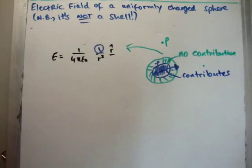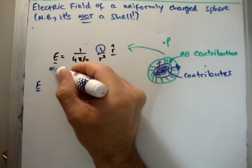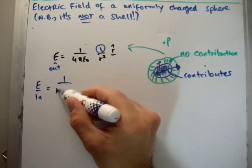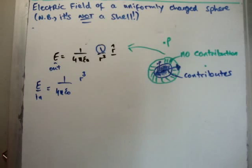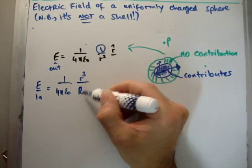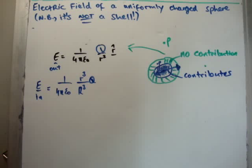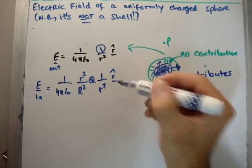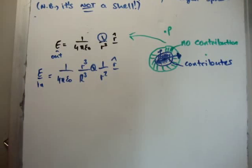So, that means the electric field internal is 1 over 4 pi epsilon 0, the radius of your enclosed sphere cubed, divided by the radius of your total sphere cubed, multiplied by your charge. But you also need, of course, to divide by 1 over r squared and have r hat. So, for that reason, you're going to end up with the following.